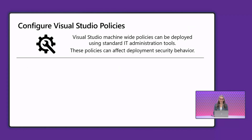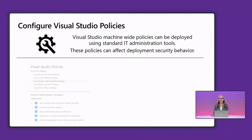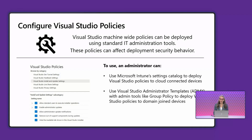Let's talk about configuration at scale. Visual Studio has a variety of configuration scopes: per user, per installation instance, and per machine. The last one, machine-wide configuration, is also referred to as global policies. They're typically stored in the registry and controlled by an administrator. About a year ago, we consolidated all of the Visual Studio global policies together and made them available for administrators to easily discover and deploy using common IT administration tools. For example, you can now find all of the Visual Studio global policies in Intune's settings catalog.